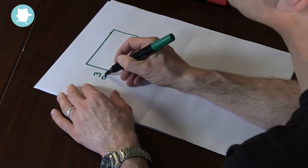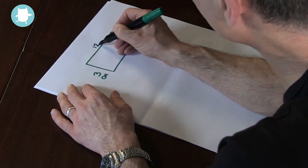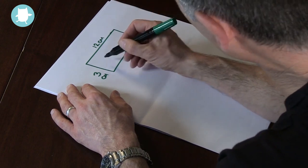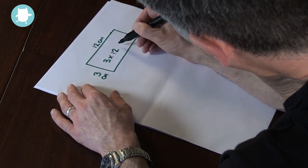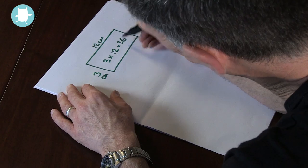For example, if I want to find the area of a rectangle, I can multiply its length, 3 centimeters, by its width, 12 centimeters, to give me an area of 36 square centimeters.